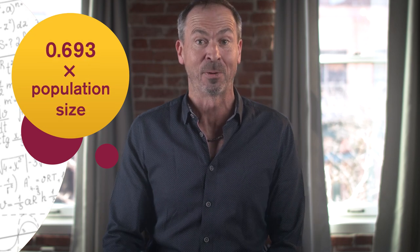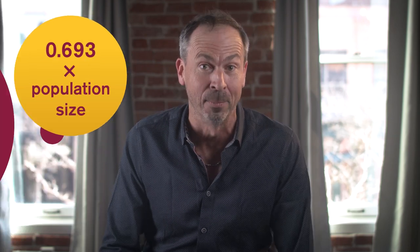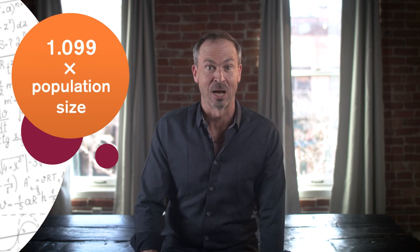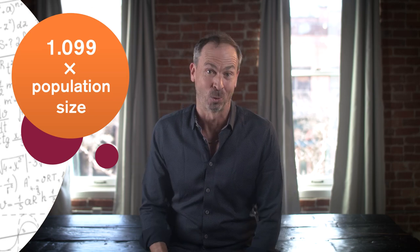When something like bacterial growth is doubling, and described by an exponential equation like 2 to the x, scientists discovered that its growth rate was equal to about 0.693 times the population size, which is an awkward number. Growth based on tripling, or 3 to the x, had a growth rate of 1.099 times the population size, another awkward number.